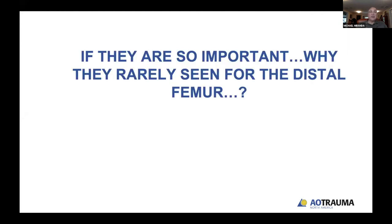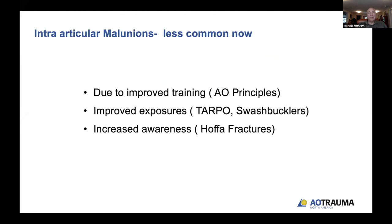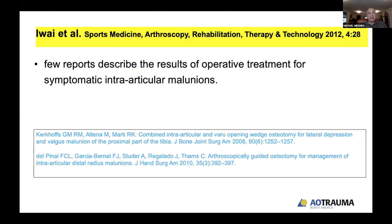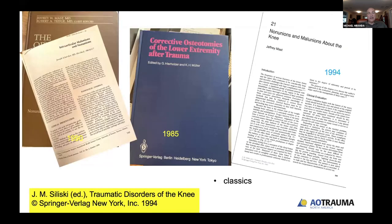These cases are seen a lot in the proximal tibia but fewer in the distal femur, because of improved training, better exposure and visualization, and increased awareness of occult fractures like Hoffa fractures. There are a number of references for this topic, but older works are more compelling and more technique-driven. Joe Schatzker's paper in Orthopedic Clinics in 1990 is very helpful, as is the book Corrective Osteotomies in the Lower Extremity After Trauma edited by Heierholzer, and Jeff Mass's article in Traumatic Disorders of the Knee — both by Springer-Verlag.